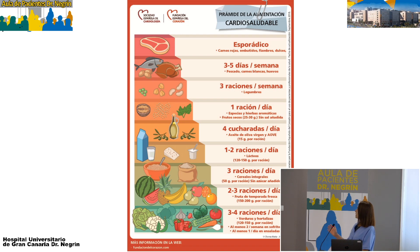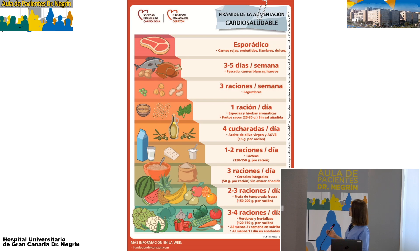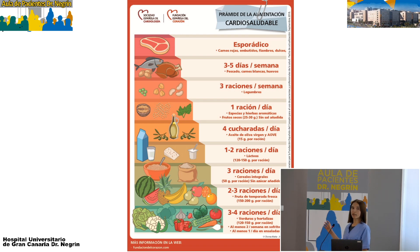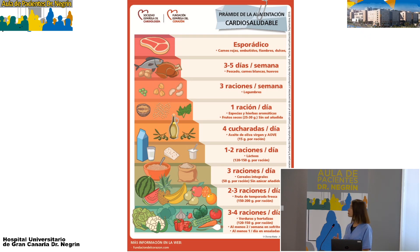Como referencia ponemos la pirámide de alimentación de la Sociedad Española de Cardiología, que es un poco la dieta mediterránea. La pirámide está organizada por escalones con el grupo de alimento y las veces que se recomienda al día o a la semana. En la base están los dos escalones más importantes: las frutas y las verduras, que hay que consumirlas varias veces al día. Las verduras, da igual que sean cocinadas, como en un potaje o guiso, o crudas como en una ensalada.